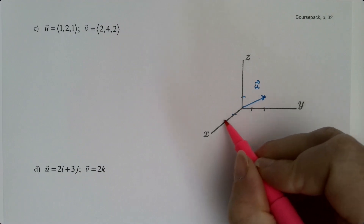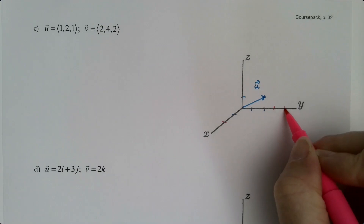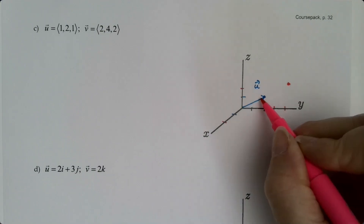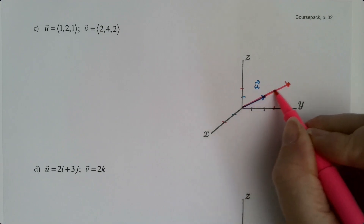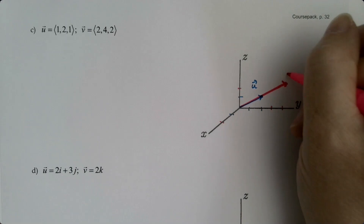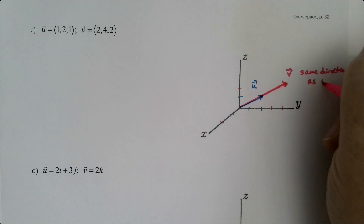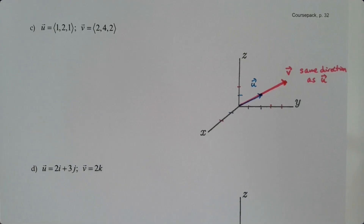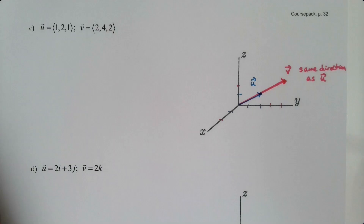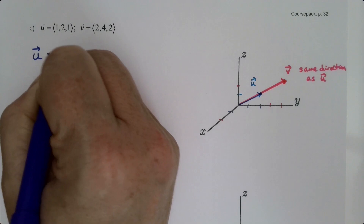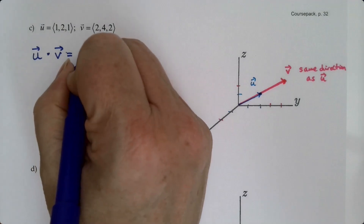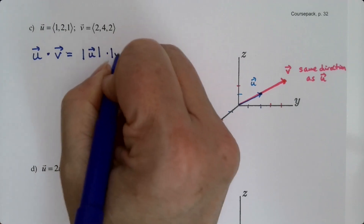The v vector goes out 2, over 4, up 2 and ends up over here — it starts at the origin and goes all that way, in the same direction as the u vector, just twice as long. So if they're in the same direction — if they're parallel vectors — what's going to happen? Let's take u and dot product it with v.